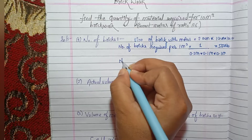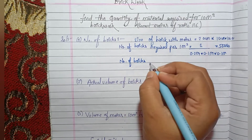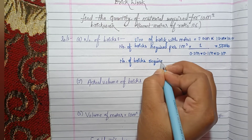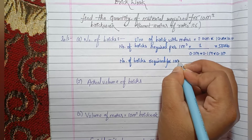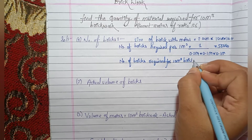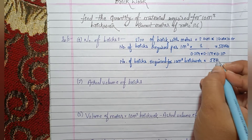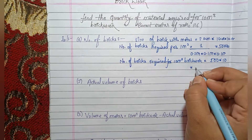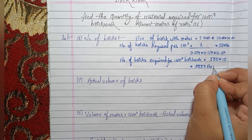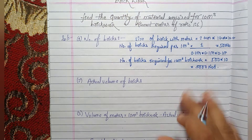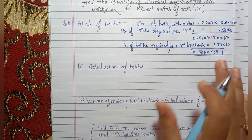We need to determine the number of bricks for 10 cubic meters. So 500 bricks per cubic meter multiplied by 10 gives us 5000 bricks required for 10 cubic meter brick work.